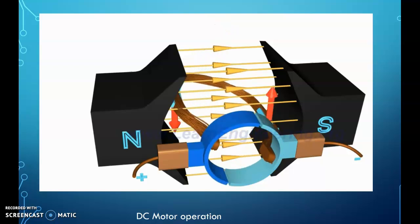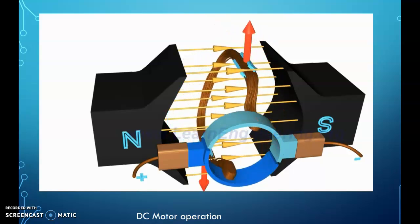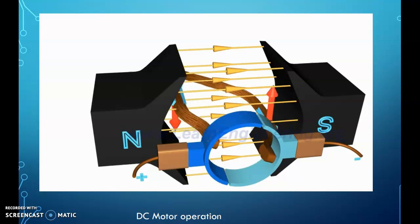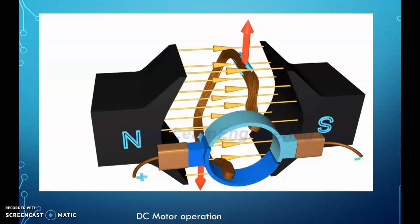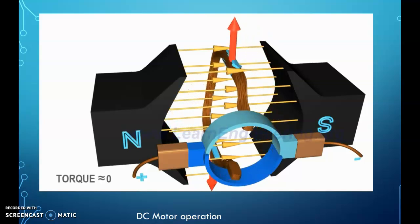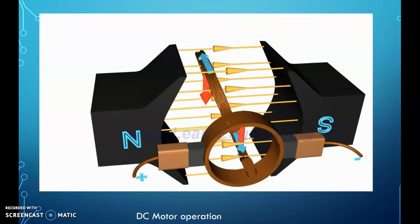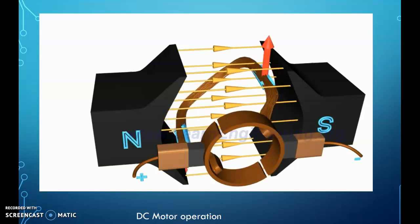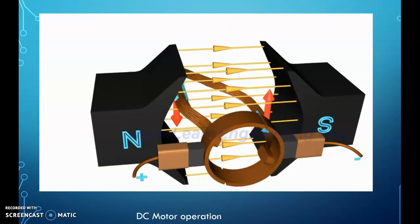But if you observe the torque action on the coil closely, you'll notice that when the coil is nearly perpendicular to the magnetic flux, the torque is near zero. As a result, there will be irregular motion of the rotor if you run such a DC motor.